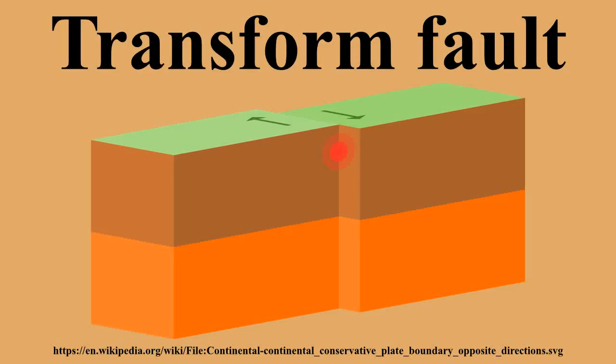A transform fault or transform boundary is a type of fault whose relative motion is predominantly horizontal, in either a sinistral or dextral direction. Furthermore, transform faults end abruptly and are connected on both ends to other faults, ridges, or subduction zones. While most transform faults are hidden in the deep oceans where they form a series of short zigzags accommodating seafloor spreading, transform faults are the only type of strike-slip fault that can be classified as a plate boundary.